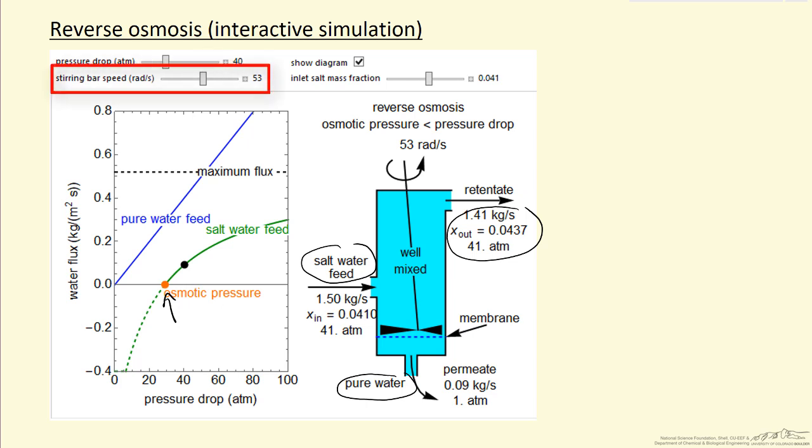If I change the stirring speed, I'll reduce concentration polarization and get a higher flux of water through the membrane. This green curve will move as I change the stirring speed. If I change the inlet salt concentration, I'm going to change the osmotic pressure, and therefore that affects how much flow I'll get through the membrane.